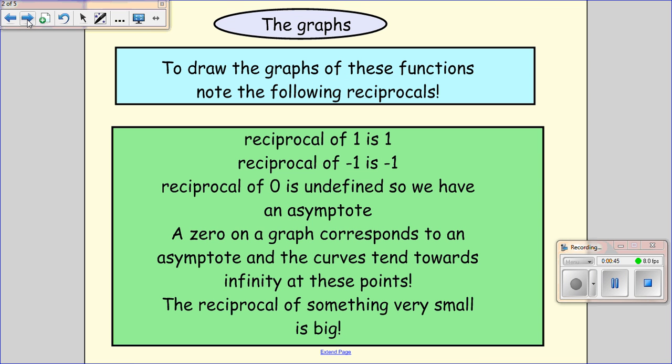Now we need to be able to draw these graphs, and to draw these graphs you need to be sure of a few reciprocal things. A reciprocal of 1 over 1 is 1, a reciprocal of minus 1 is minus 1, a reciprocal of 0 is undefined, so we have an asymptote.